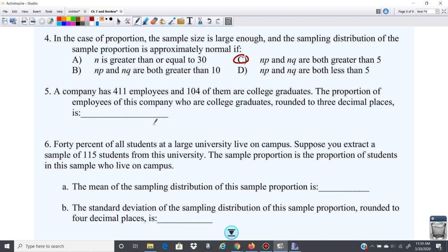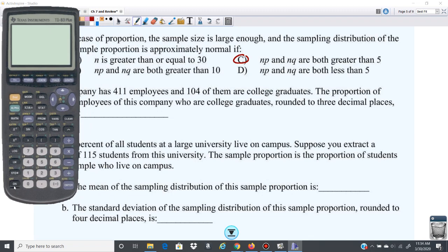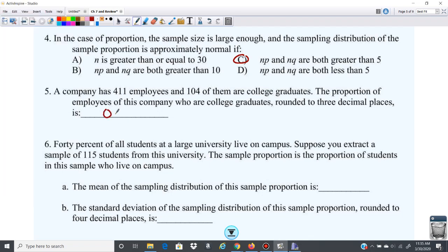So number five, we are doing proportion here. A company has 411 employees, 104 college graduates. The proportion of employees who are college graduates rounded to three decimal places is what? So three decimal places, 0.253. And that's the proportion that you're looking at. So your P would be 0.253.